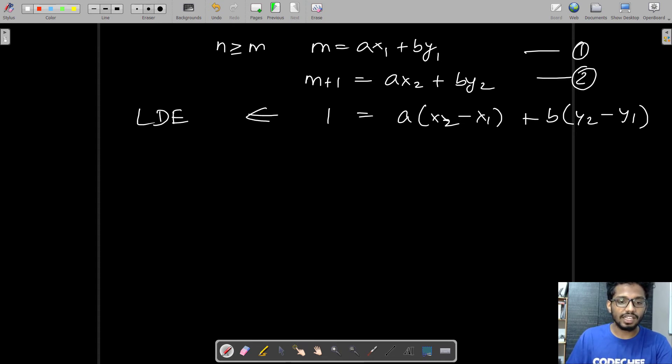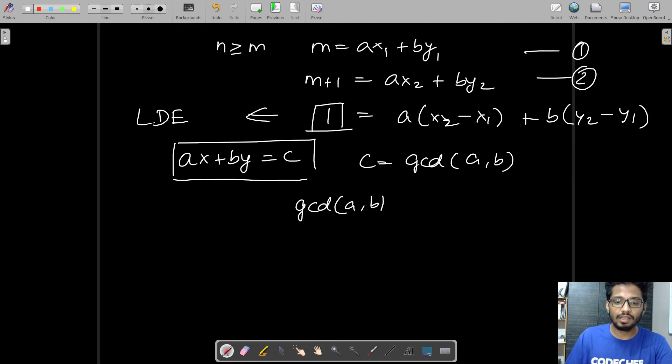This equation will only have a solution if c equals gcd(a, b). In this case, we know that c is 1, so we should have gcd(a, b) = 1. That is, a and b should be coprime numbers. Only then will a solution be possible.